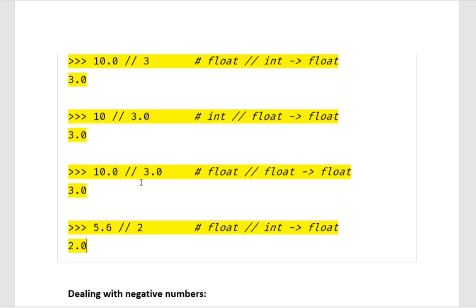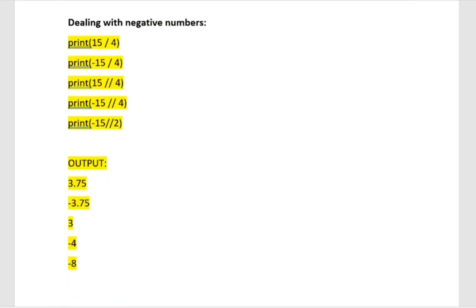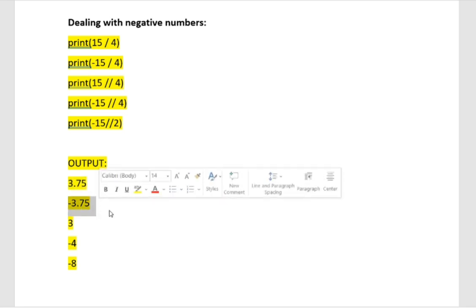One more variation you need to know is negative numbers — how to deal with them in division and floor division in Python. If you do print 15 divided by 4 (true division), you get 3.75. Then print -15 divided by 4 (true division) — since the first number is negative, you get -3.75.